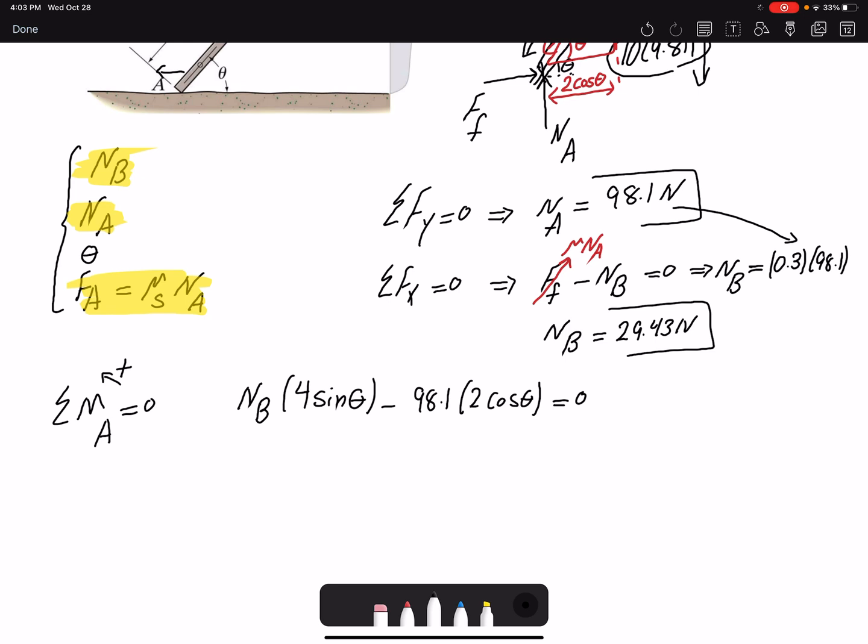In this problem, I want to know theta. If I divide the whole equation by cosine theta, I get rid of cosine theta over there. I have the value for Nb, so I can plug it in. Nb is 29.43.